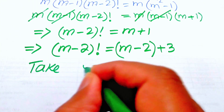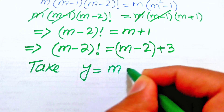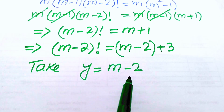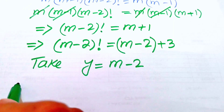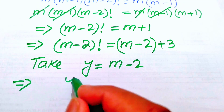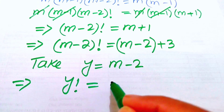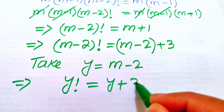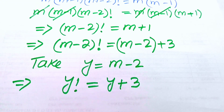We let y equal m minus 2. Substituting (m minus 2) equals y, the expression becomes y factorial equals y plus 3.